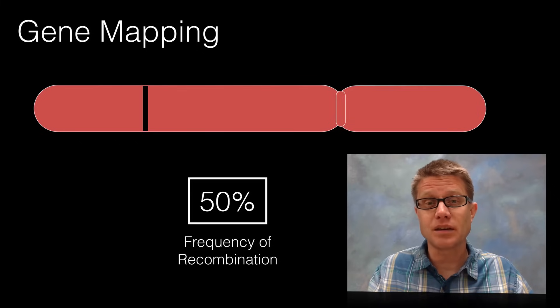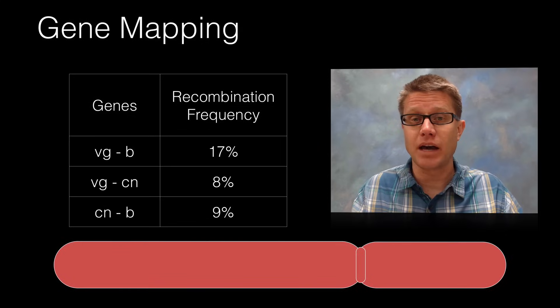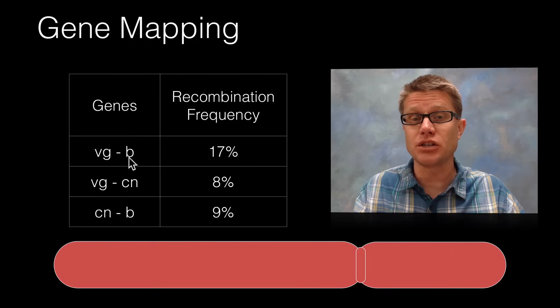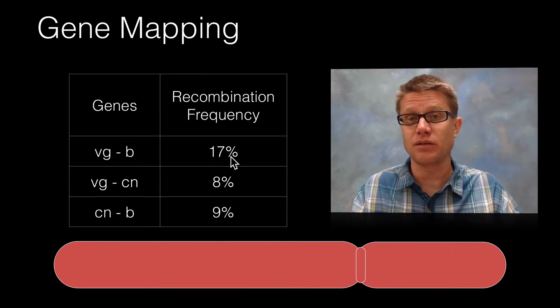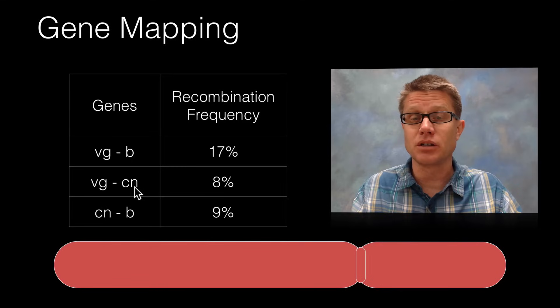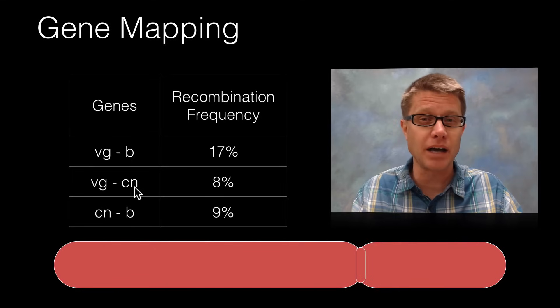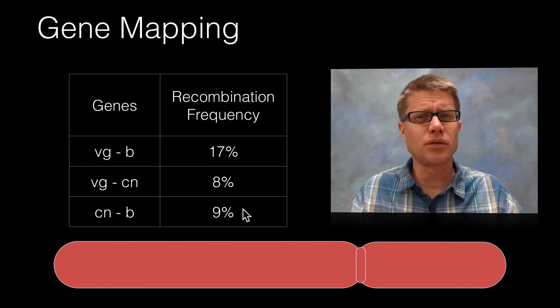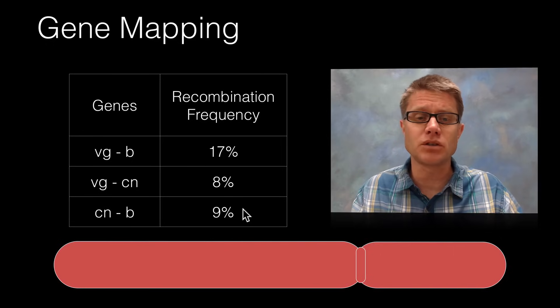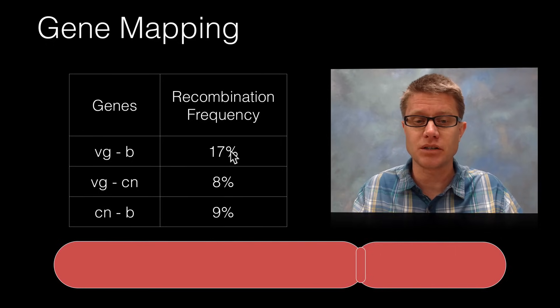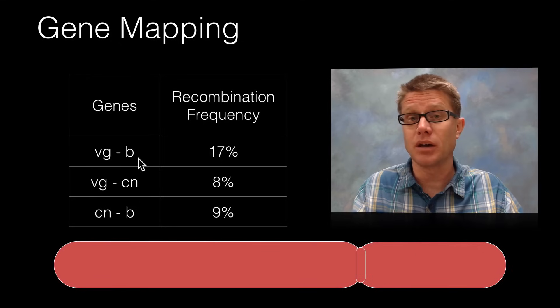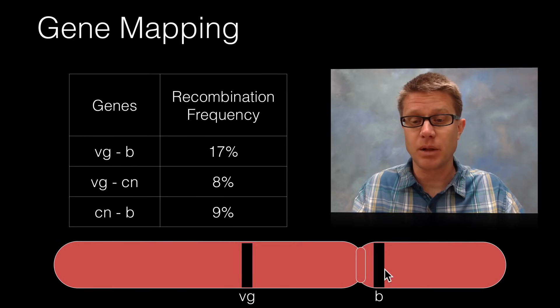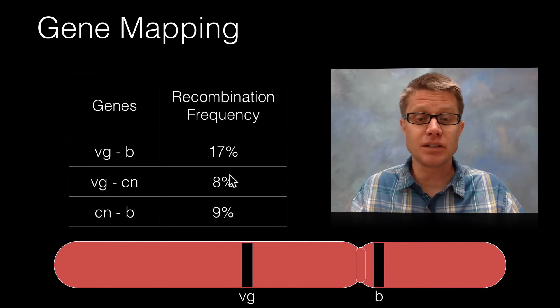So we can use that to really map a chromosome. Let's look at some of the data that they gathered. They found that the distance between the vestigial and that black coloration gene, the frequency of recombination is 17%. They then compared that to another gene called the cinnabar which has to do with the eye coloration of the fruit fly, and they got these frequency of recombination as well. When you're figuring out a gene map, what I would encourage you to do is always start with the highest frequency of recombination. So I'm going to start with this one and just choose to put them on that chromosome, 17 units apart. We're going to put the vestigial and the black apart by 17.